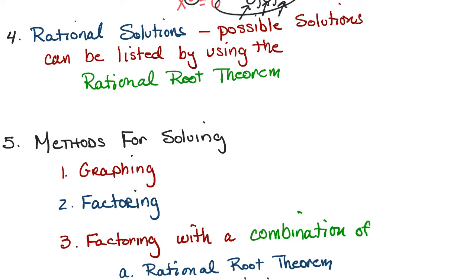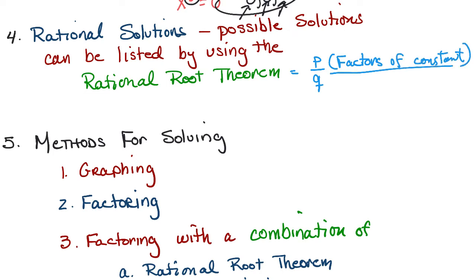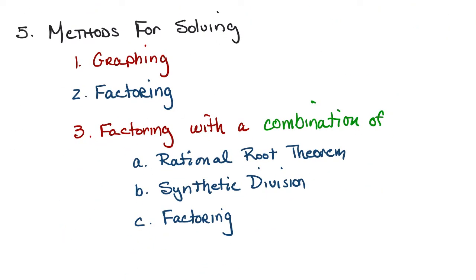The fourth review item is the Rational Root Theorem, where you make the list of p's over q's. For a polynomial, you list the potential solutions by looking at the factors of the constant over the factors of the leading coefficient.